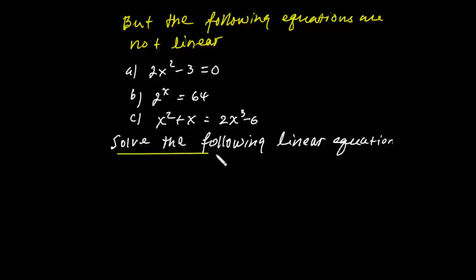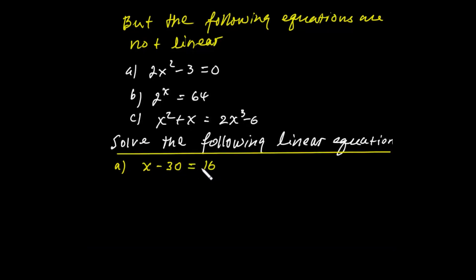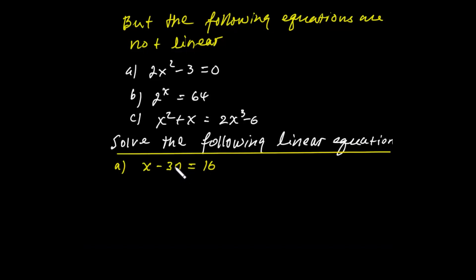Solve the following linear equations. For x minus 30 equals 0: we use the transformation rule — move the constant term to the other side. Since negative 30 is present, we add 30 to both sides of the equation. So x minus 30 plus 30 equals 0 plus 30.